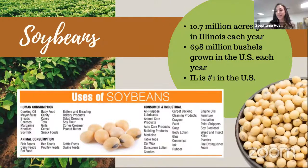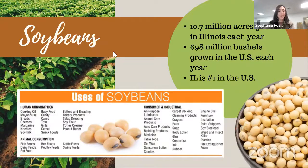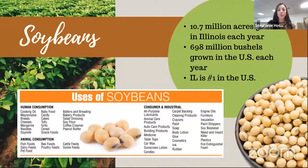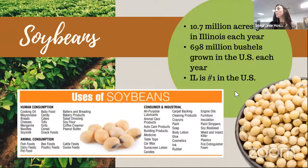For soybeans, we are growing 10.7 million acres in Illinois, and in the entire U.S. about 698 million bushels each year. Illinois is number one in the United States for growing and harvesting soybeans. From our soybean ag mag: there are so many other uses of soybeans — carpet backing, crayons, soaps, and more. We had highlighted the idea of other uses last week when Chris talked about pigs and pork byproducts.